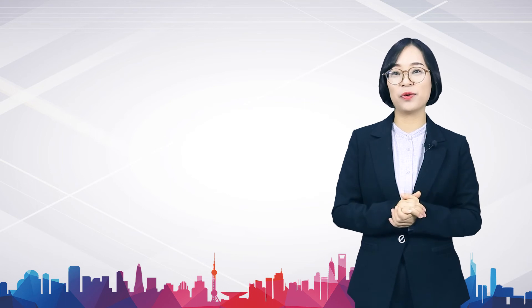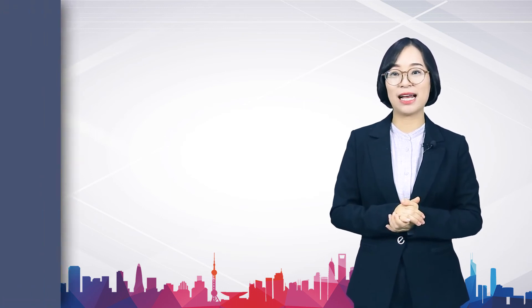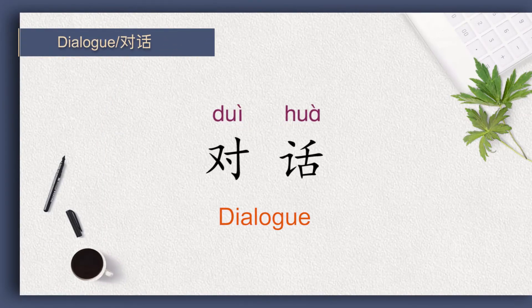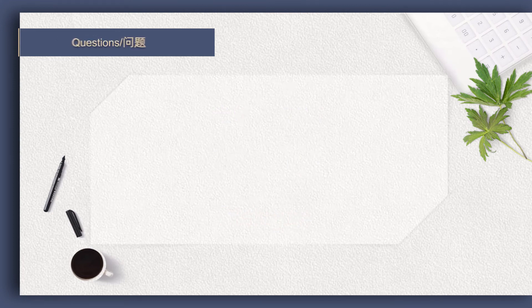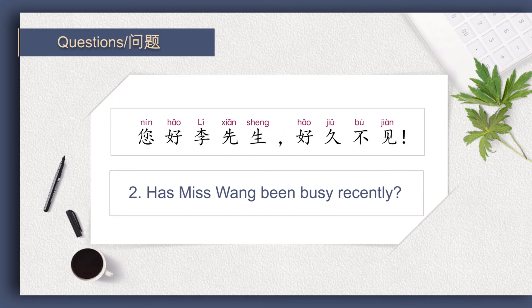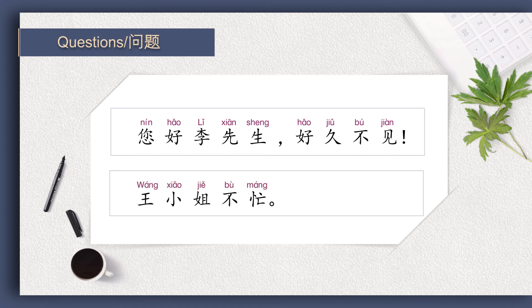Let's come to Dialogue 4. Please listen carefully and answer the following questions. 您好,王小姐。 欢迎您。 您好,李先生。 好久不见。 好久不见。 您忙吗? 不忙。 请进。 When Mr. Lee said hello Miss Wang, welcome — how did Miss Wang reply? 您好,李先生。 好久不见。 Has Miss Wang been busy recently? 王小姐不忙。